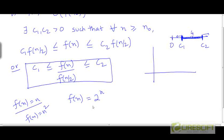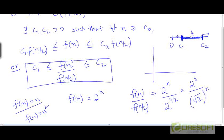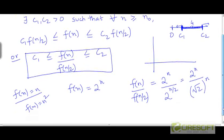So, what would be the ratio of f(n) by f(n/2) here? This would be 2ⁿ divided by 2^(n/2). This can be simplified to 2ⁿ divided by √(2ⁿ). This is basically (2^(1/2))ⁿ.